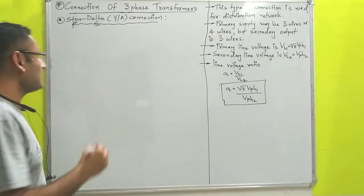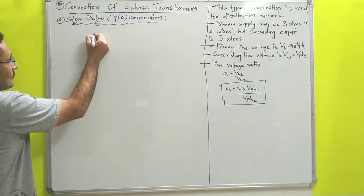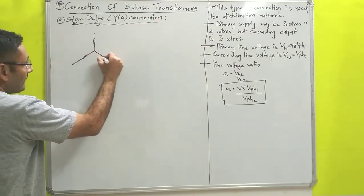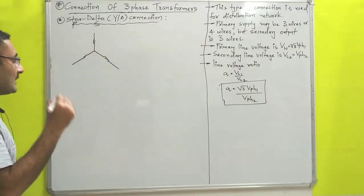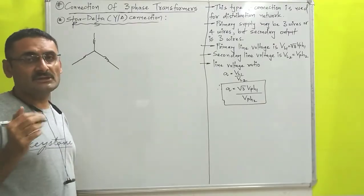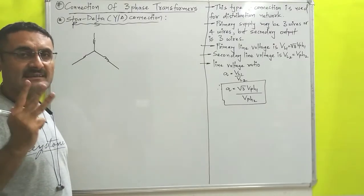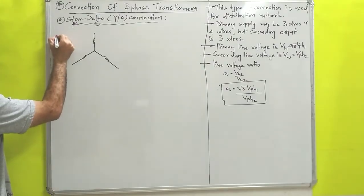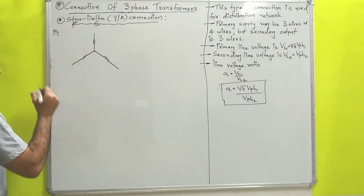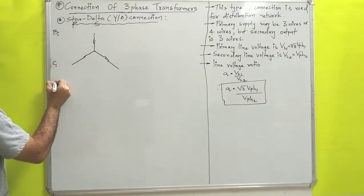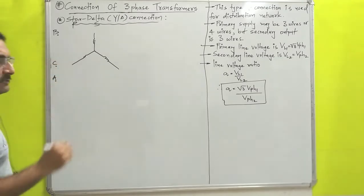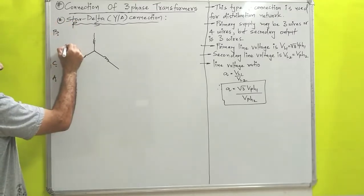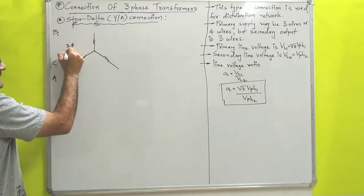With the help of symbols, we will first understand. So first is star — I will draw this type of star connection, that is a three-phase star connection. Now that three-phase star connection we will connect with three terminals. For the three-phase AC voltage supply, we have terminal B, terminal C, and terminal A. These three terminals are connected with the three-phase AC supply.